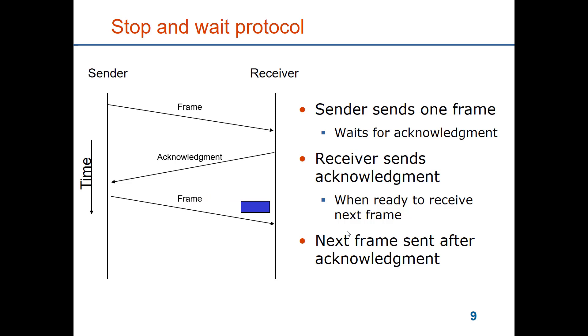If the receiver should be busy — for instance, receiving data from another sender — it can always stop a sender by holding back the acknowledgement, and therefore the sender is not permitted to transfer a new frame.